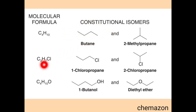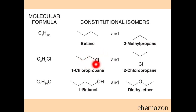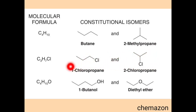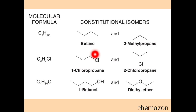In the second example, 1-chloropropane and 2-chloropropane: you can see that the position of the chloro group is at the first position on the three-membered carbon chain in one molecule, and at the second position in the other. So this is called a positional isomer, where the position of a functional group is changed.